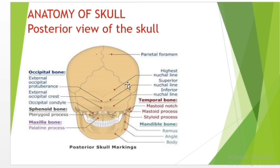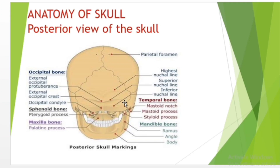Look at this — this is the nuchal line. It is a curved line on the external surface of the occipital bone. The uppermost one is named the highest nuchal line, but is sometimes referred to as the supreme nuchal line. It is attached to the epicranial aponeurosis. Below the highest nuchal line is the superior nuchal line, which is also a curved line on the external surface of the occipital bone, also attached to the epicranial aponeurosis.